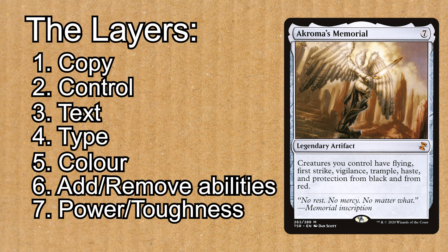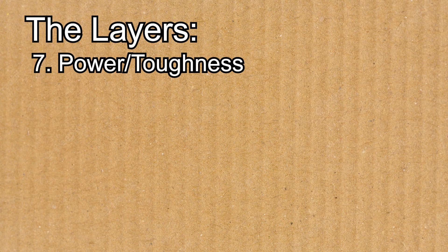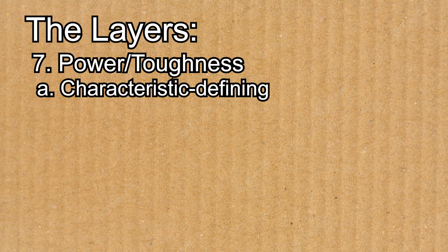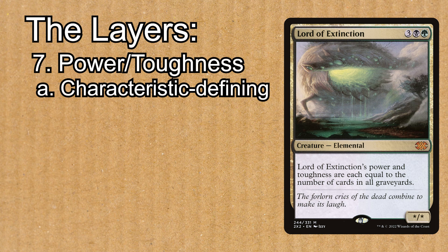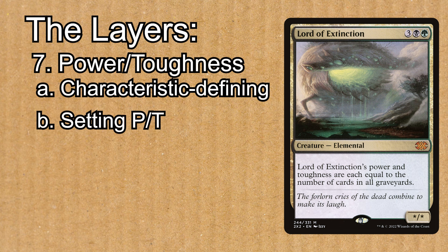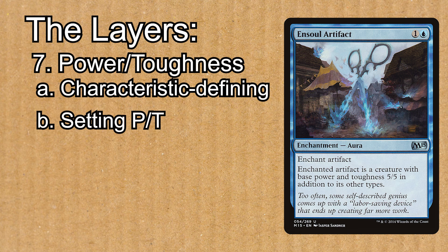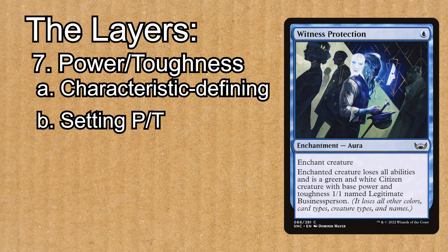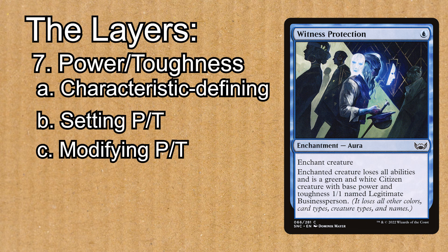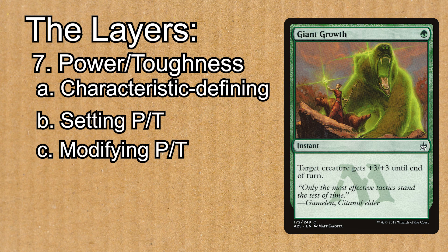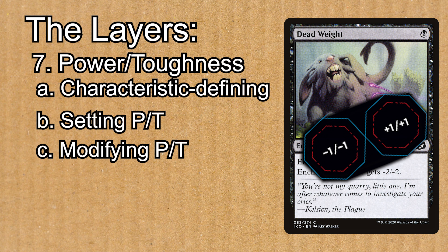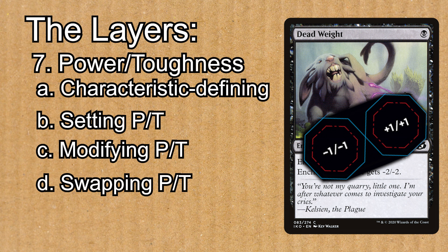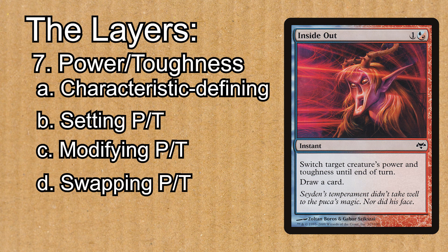There are a few different kinds of Layer 7, applied in the following order. In Layer 7a, we have characteristic-defining abilities like those on Tarmogoyf or Lord of Extinction — basically any ability that determines the value of a star on that creature's power or toughness. In Layer 7b, we have effects that set base power and toughness, like Ensoul Artifact or Witness Protection. In Layer 7c, we have effects and counters that modify power or toughness, like Giant Growth, Dead Weight, or +1/+1 or -1/-1 counters. And finally, in Layer 7d, we have effects that switch power and toughness, like Inside Out or Twisted Image.